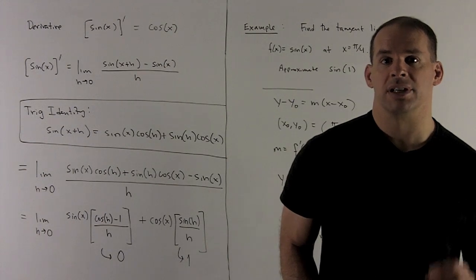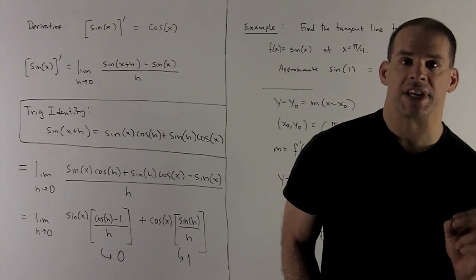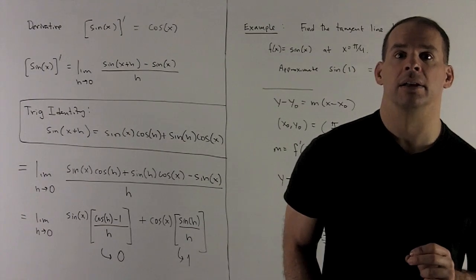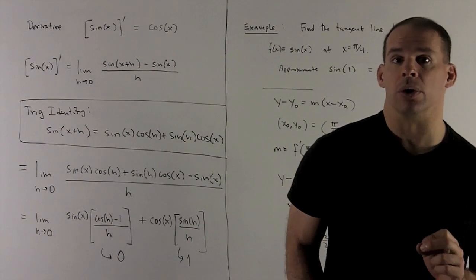Let's take a look at the derivatives of sine and cosine. First up, derivative of sine is going to be equal to cosine. To get that, we just write down our definition, follow our nose.